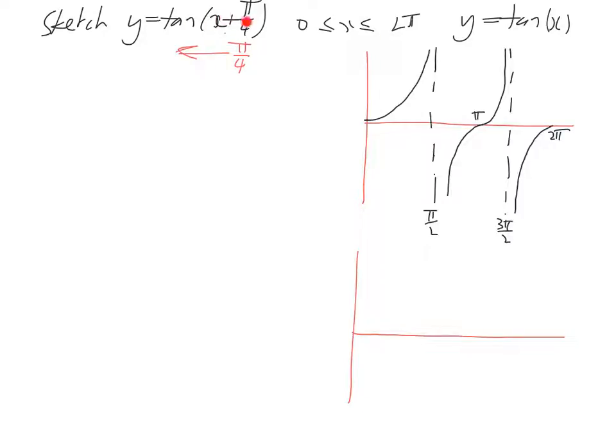So what's going to happen is that this is going to cause everything to move across by pi on 4 to the left. So basically this will move across pi on 4, this will move across pi on 4, and this will move across pi on 4. And finally this will move across pi on 4.